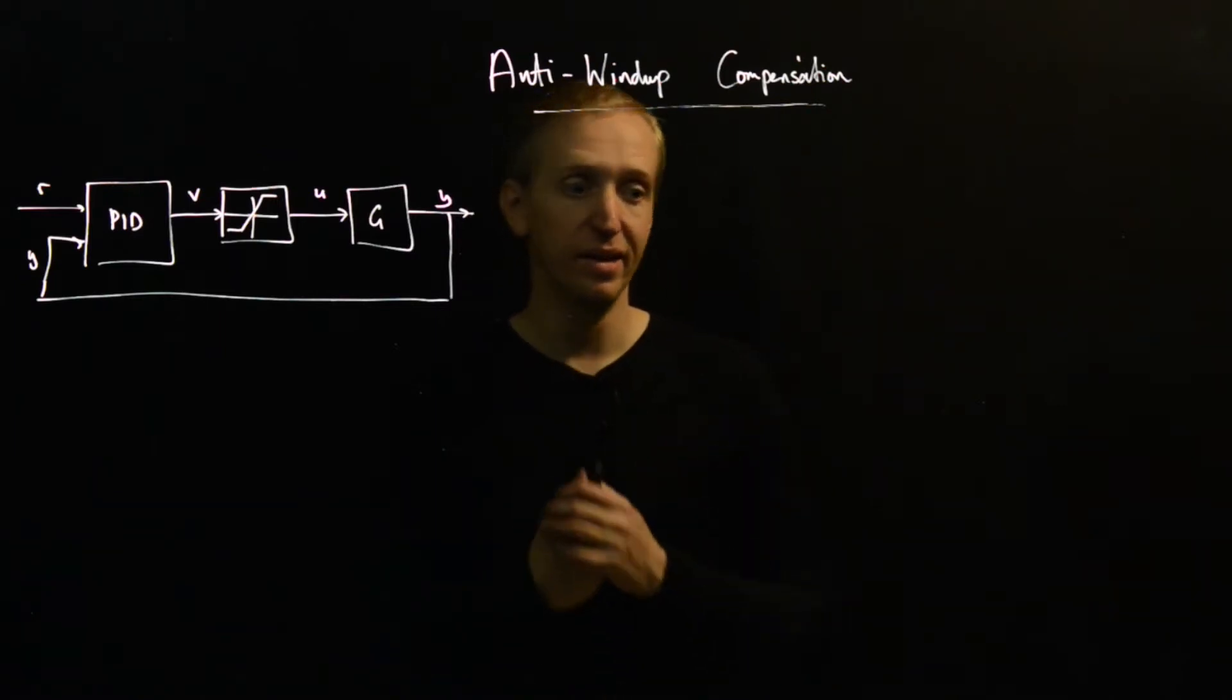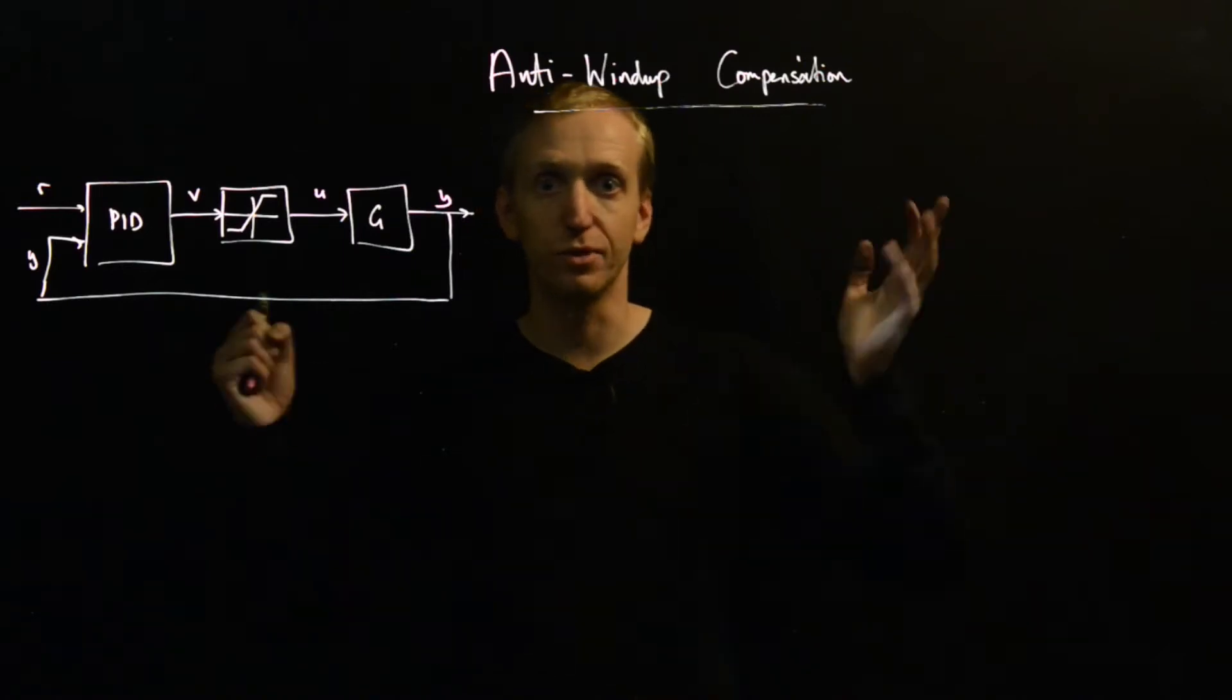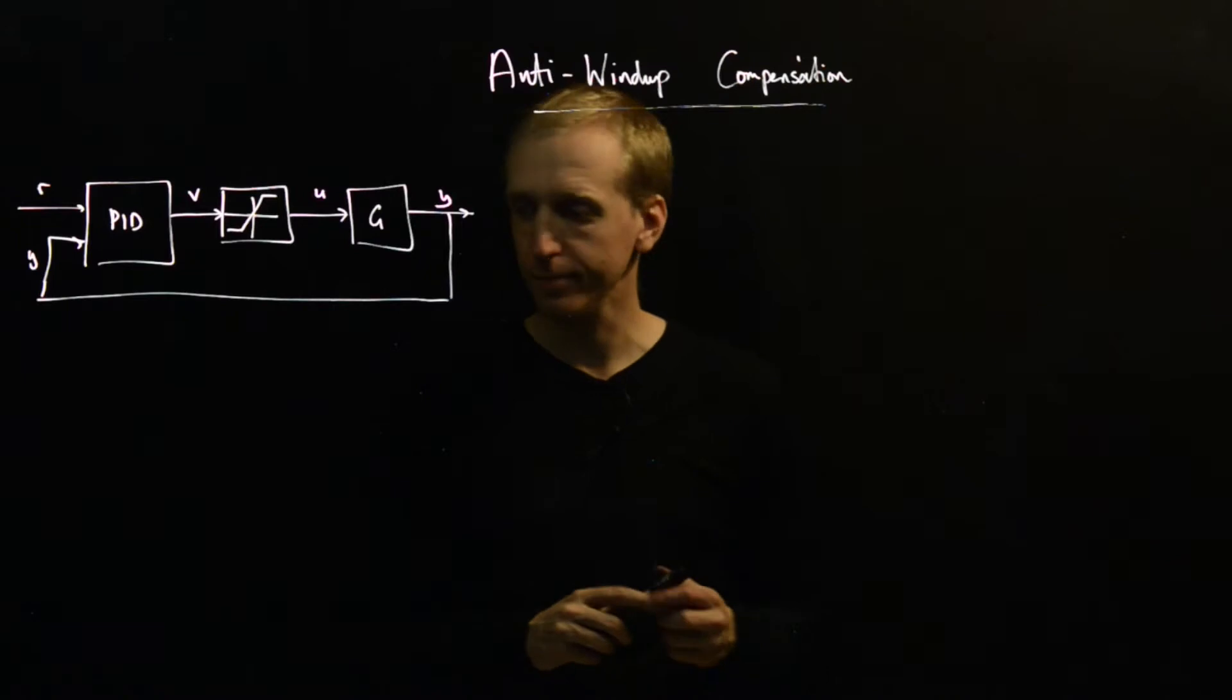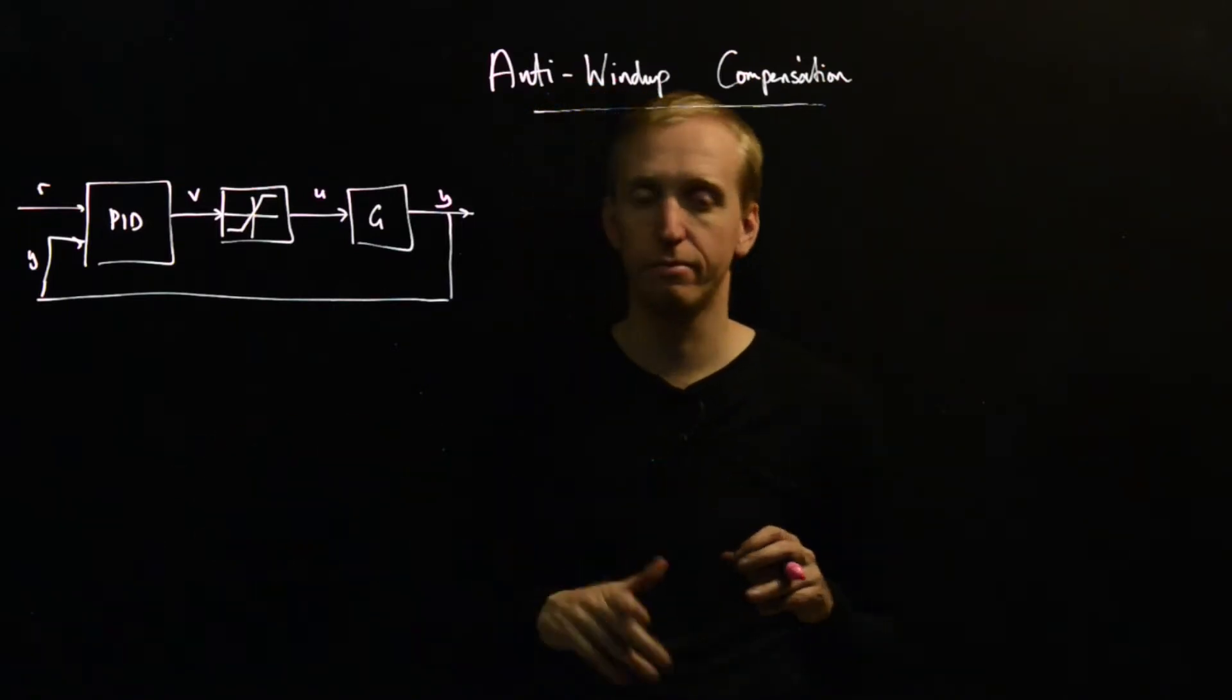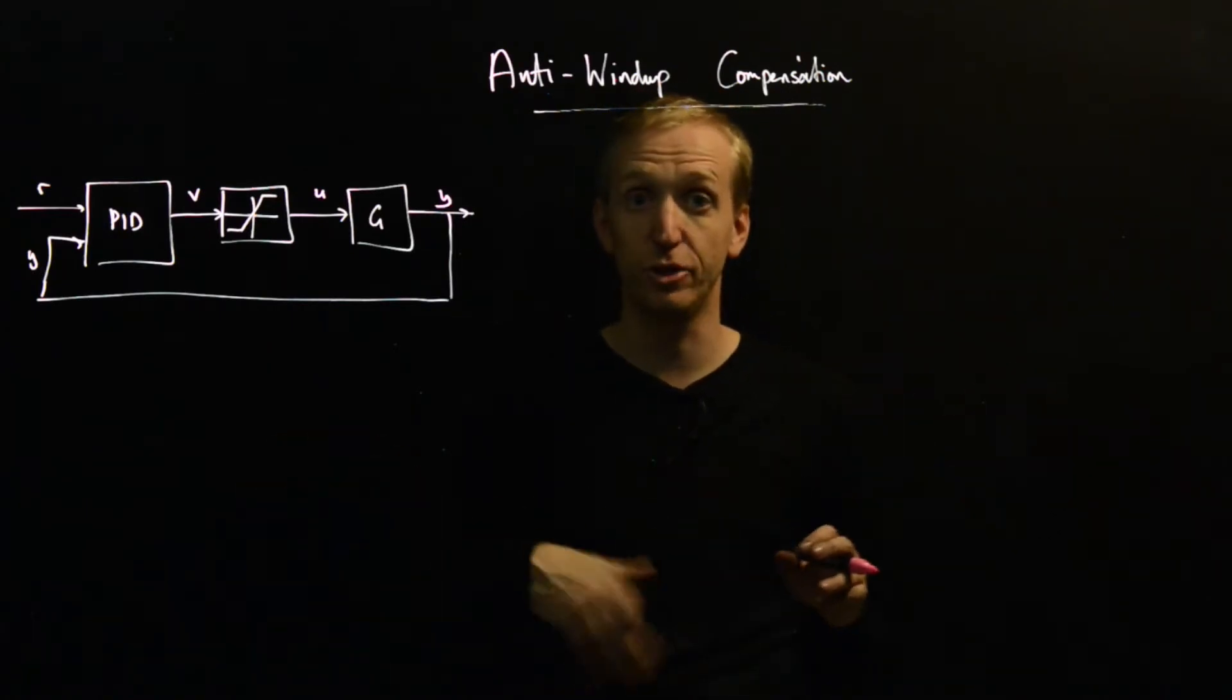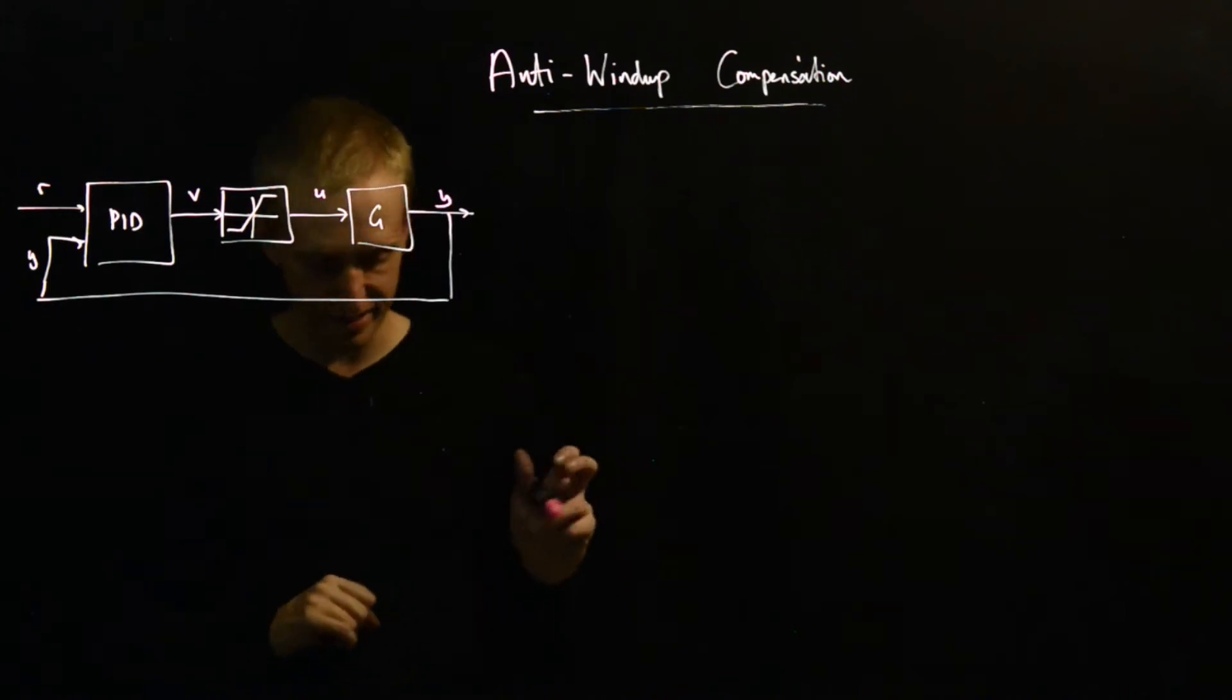And we saw last time that this can lead to issues when you have integral action and you try and do reference point changes. Basically, the integral term gets bigger and bigger and bigger. And then even when you reach a new set point, this integral term is huge and forces you to keep on going. Even when you've arrived at the set point, it just drives you well beyond until the integral term manages to unwind and come back down. And there's no sort of rocket science here.